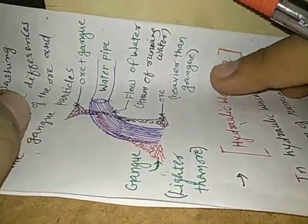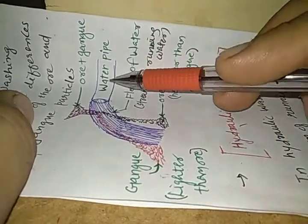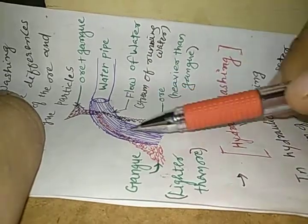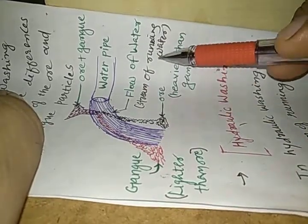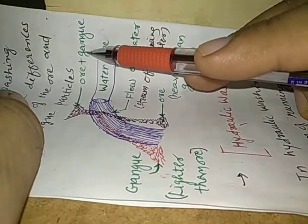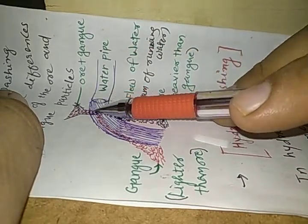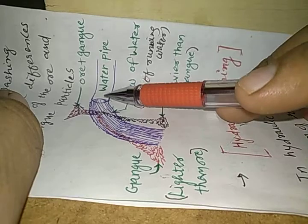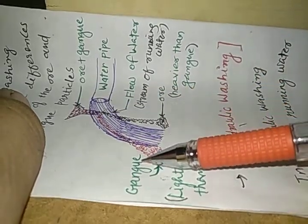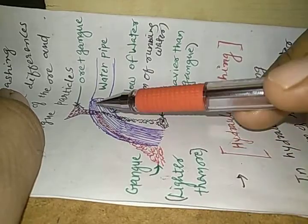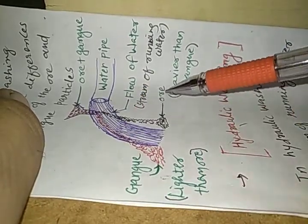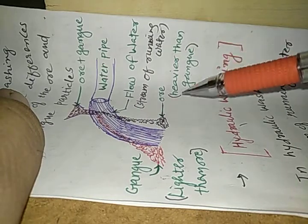Let us understand it with a diagram. Here we have a water pipe from which there is a flow of water — a stream of running water. A mixture of ore and gangue is allowed to fall onto the flowing water. The gangue particles are less dense, and that is why they flow away with the water, whereas the ore, which is heavier than the gangue particles, does not get carried away.